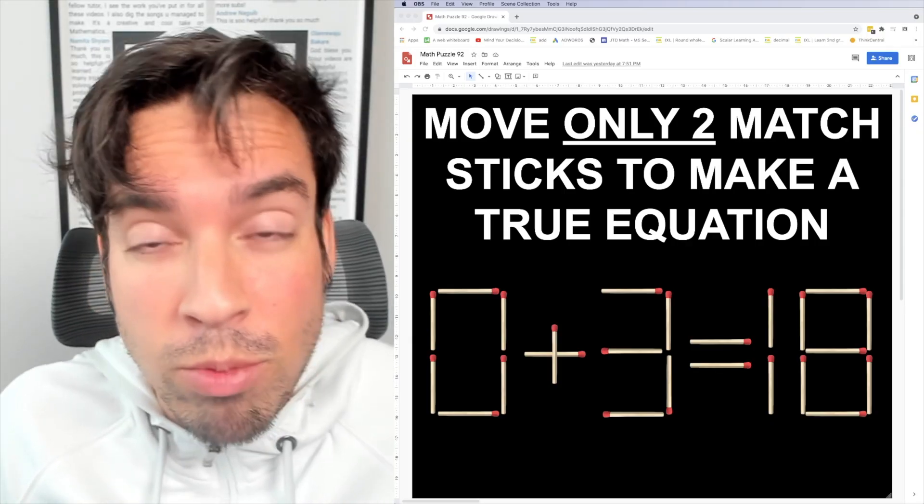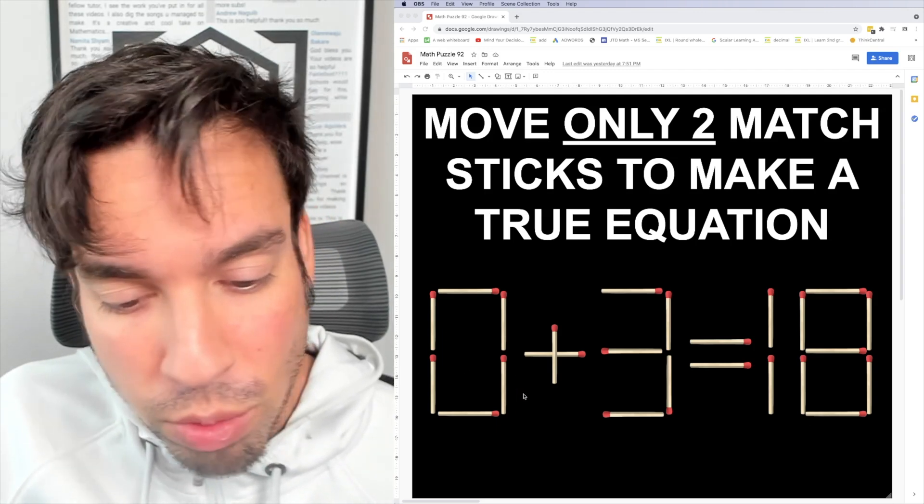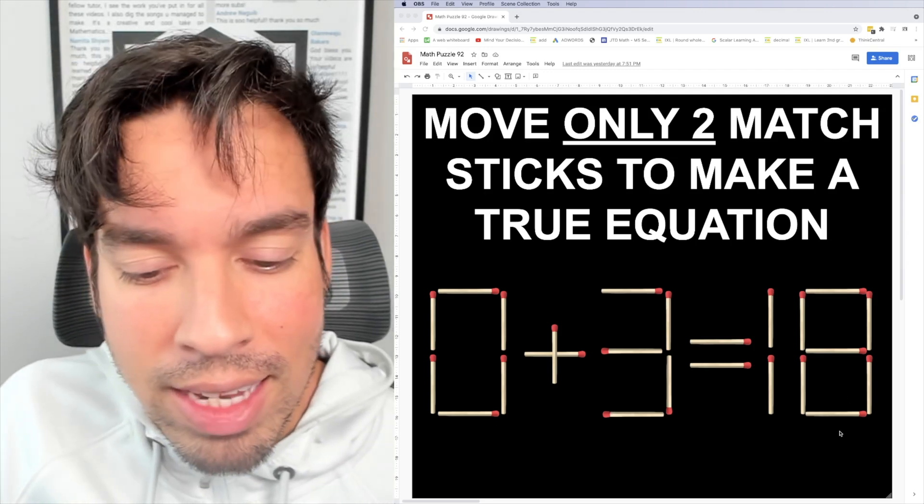Alright, so first things first - we can move two matchsticks and we're trying to get the two sides equal to each other. Right now it's 0 plus 3 which is 3. On the other side we got 18.